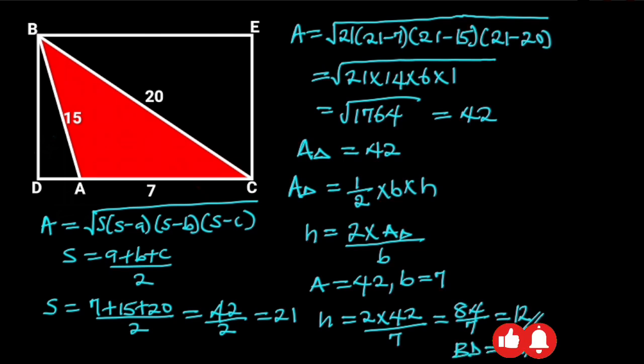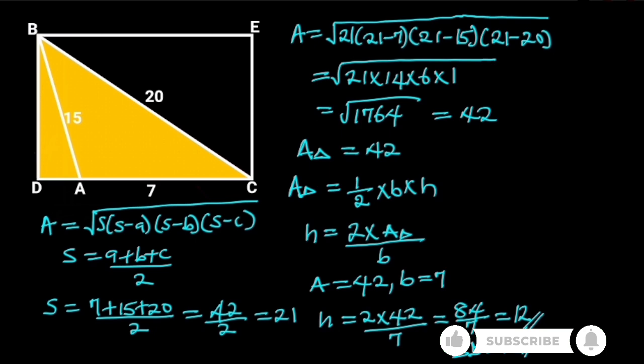Next, let's find the length DC of the rectangle. To do so, let's consider triangle BDC. Observe that triangle BDC is a right angle triangle. So from Pythagoras theorem,